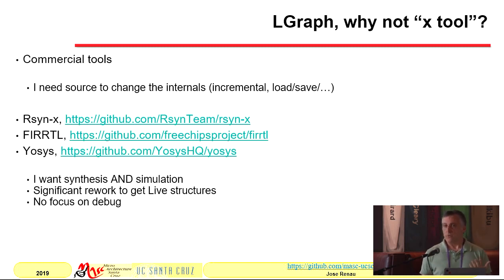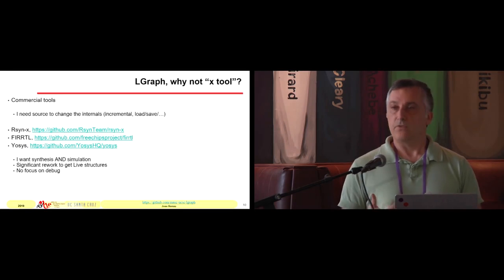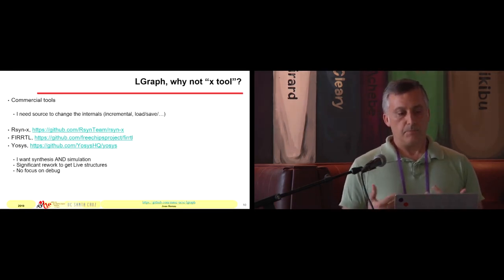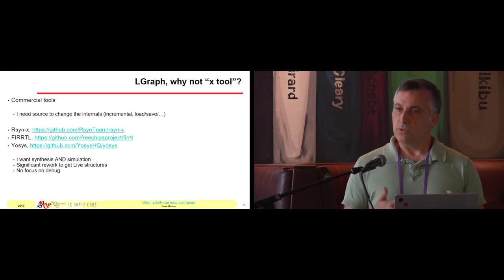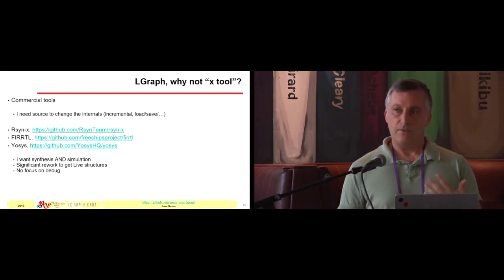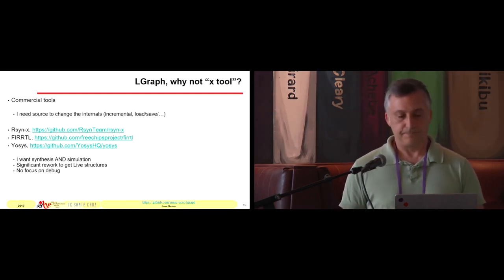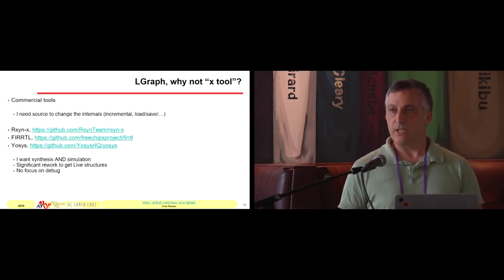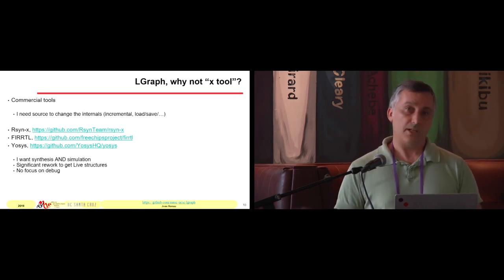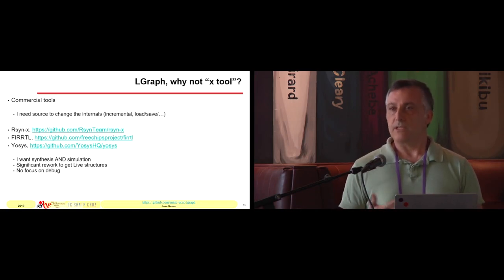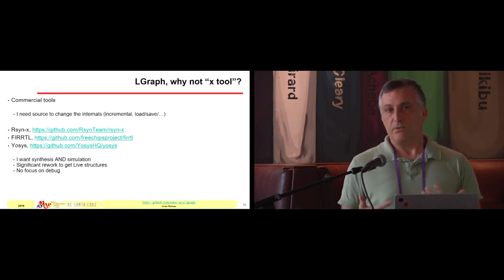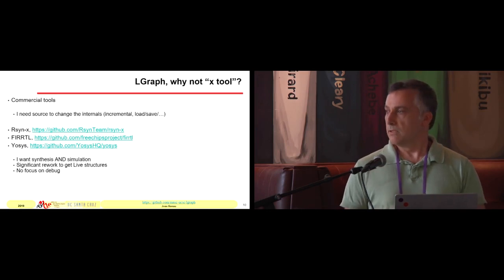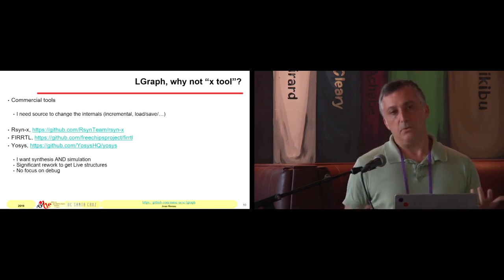So there are three major options we were considering: there is Yosys, there's Circt, and there's JOSS. My issue is I want to do synthesis and simulation, and none of them target all three. Because I have this live focus on very fast response time, I'd have to rework the internal structure, which makes it very difficult. And none of them has a focus on debug at least as much as I want. So the end result — we had to do our own tool. And that's what L-Graph is.